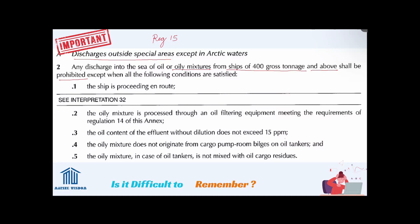The first criterion: the ship is proceeding en route — meaning it should be on a planned voyage, following a course, not circling in the same place. The second criterion: the oily mixture is processed through an oil filtering equipment — this is the oily water separator — meeting the requirements of Regulation 14 of this annex. In short, it must pass through an approved oil filtering equipment.